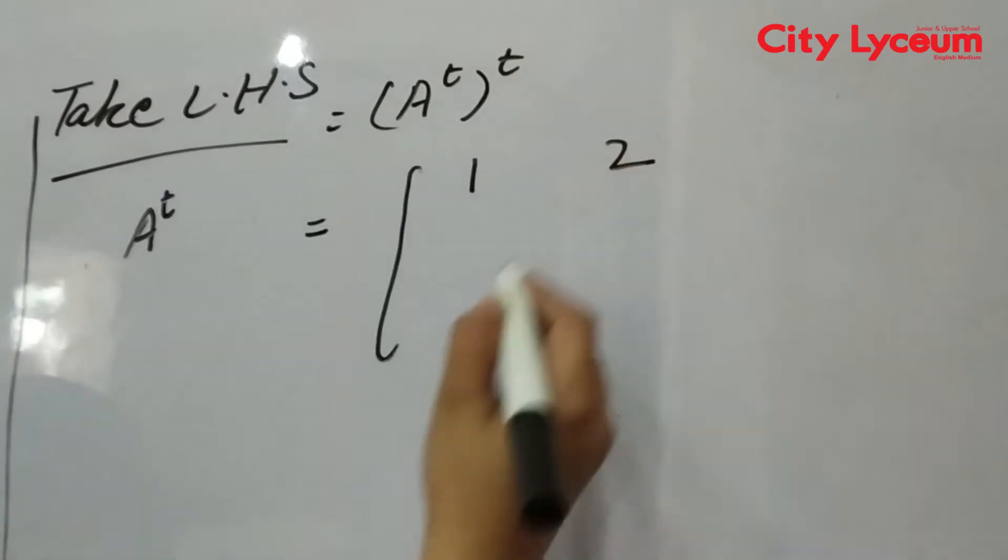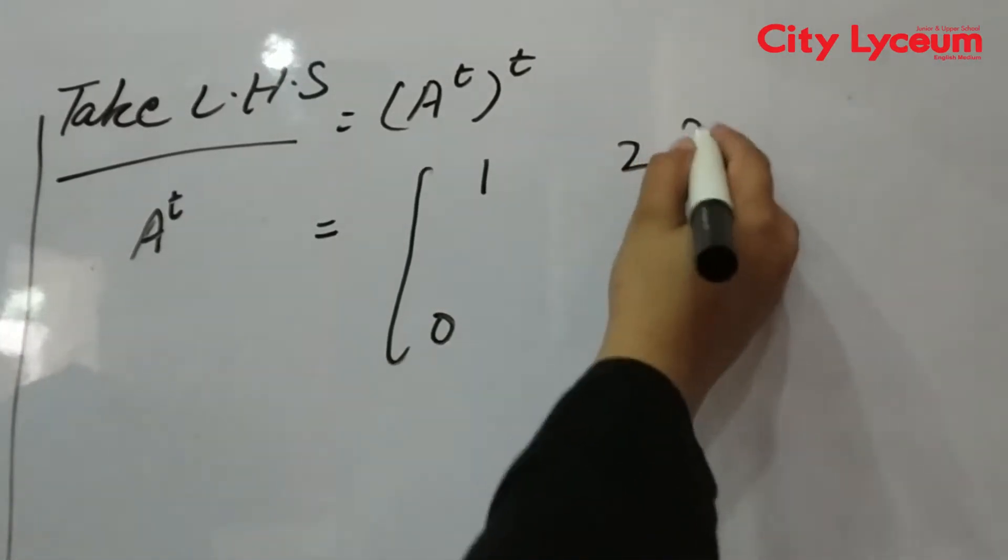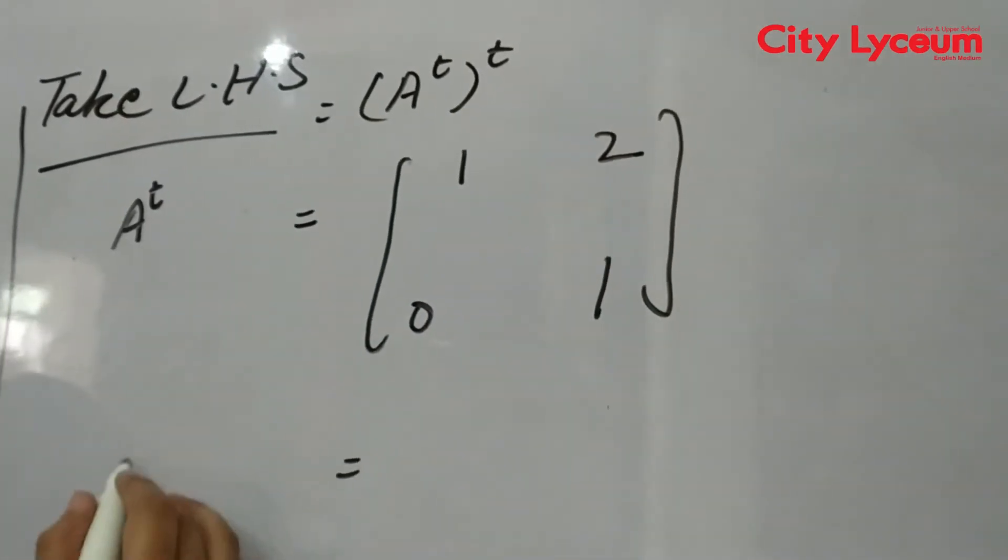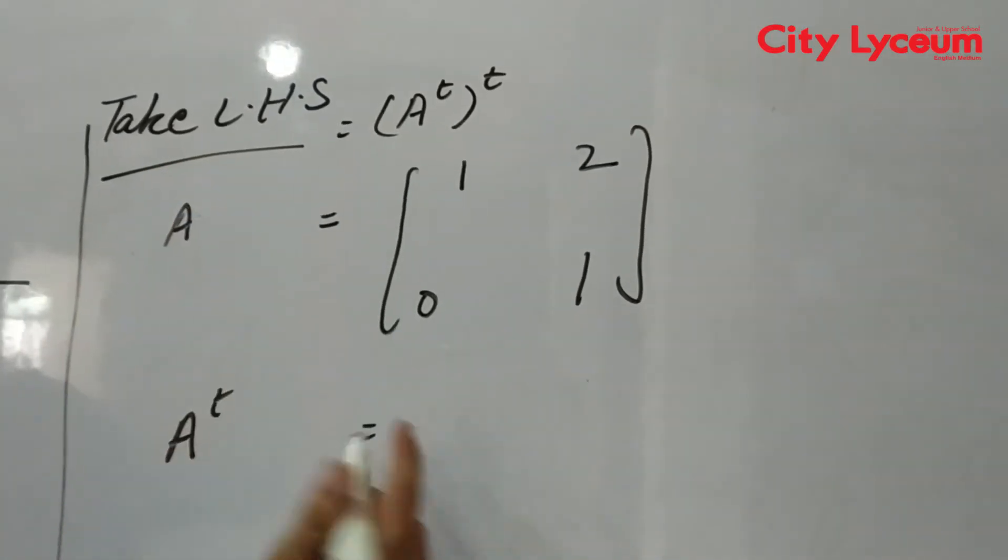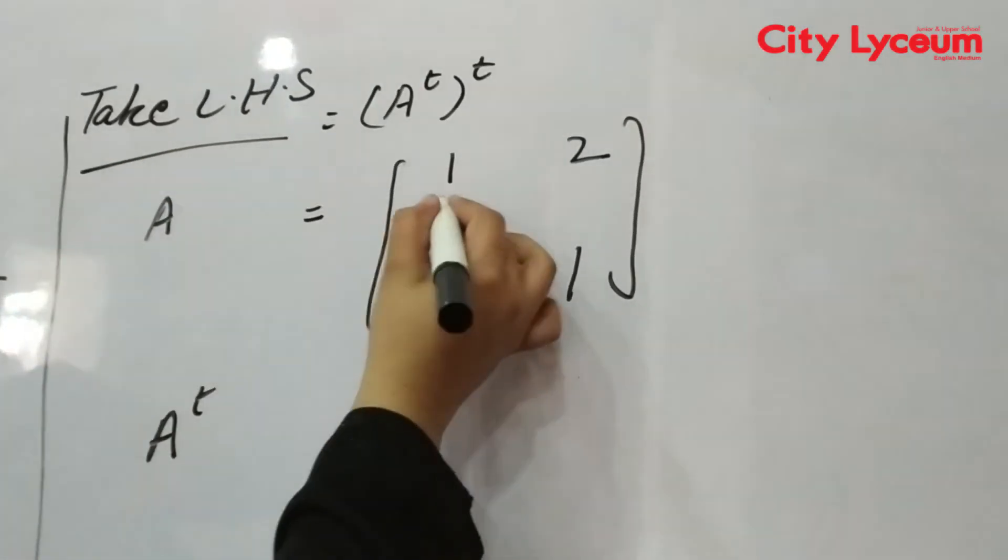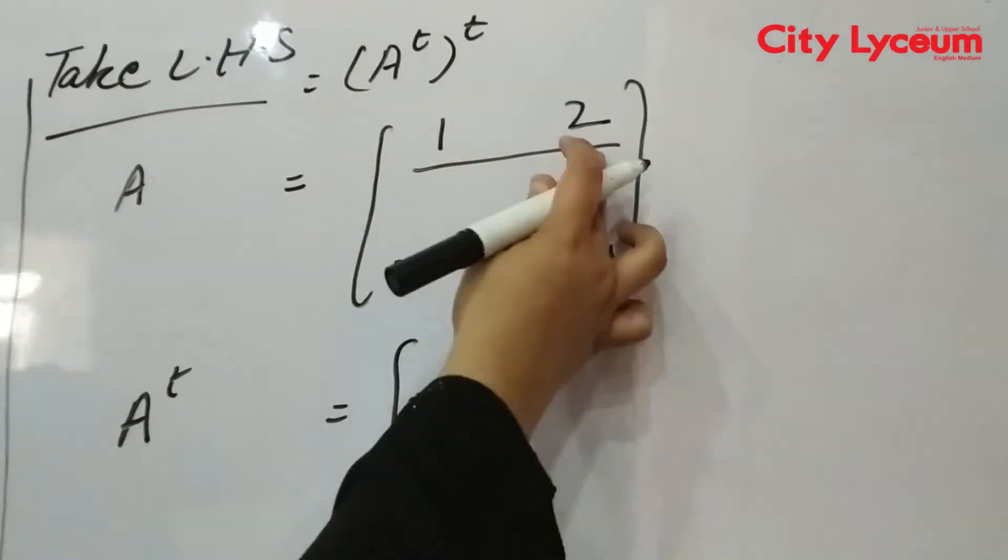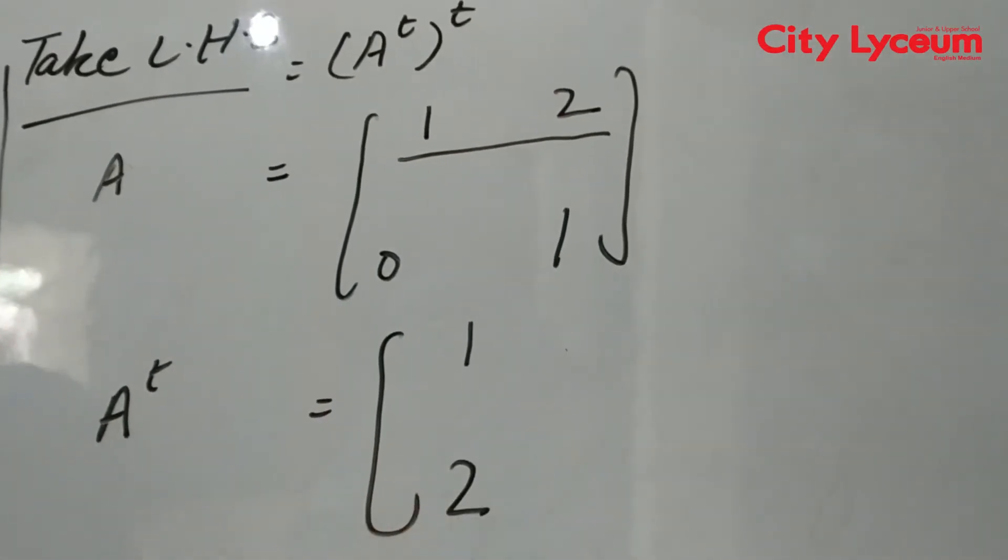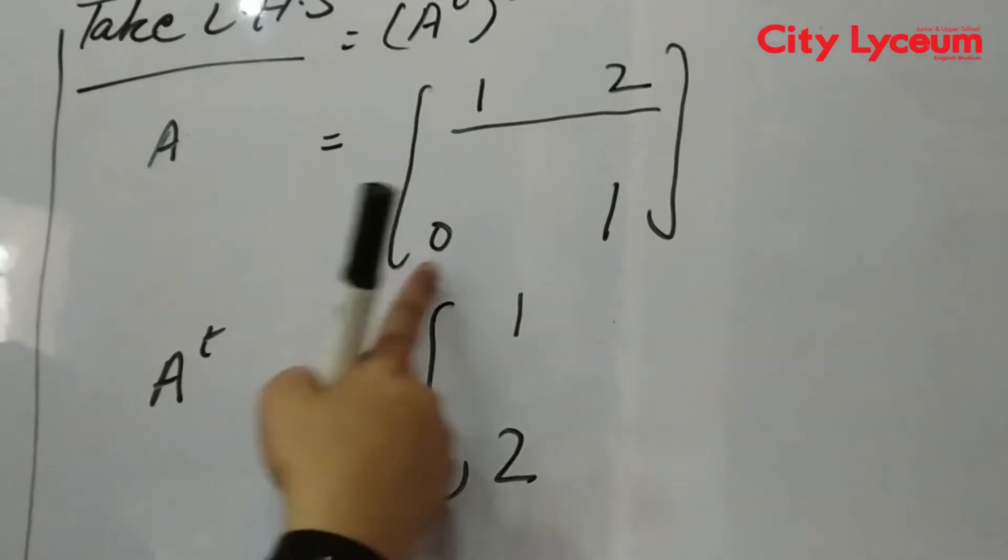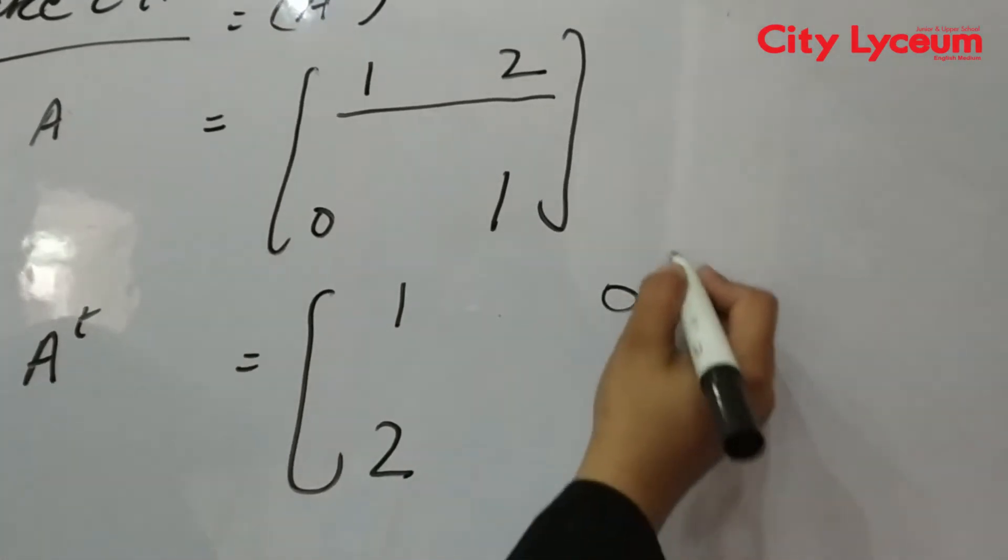A transpose means A = [1 2; 0 1]. We have to transpose this. When we transpose it, we convert the rows into columns. 1, 2 we will write vertically, and then 0, 1 which is horizontal we will write vertically.